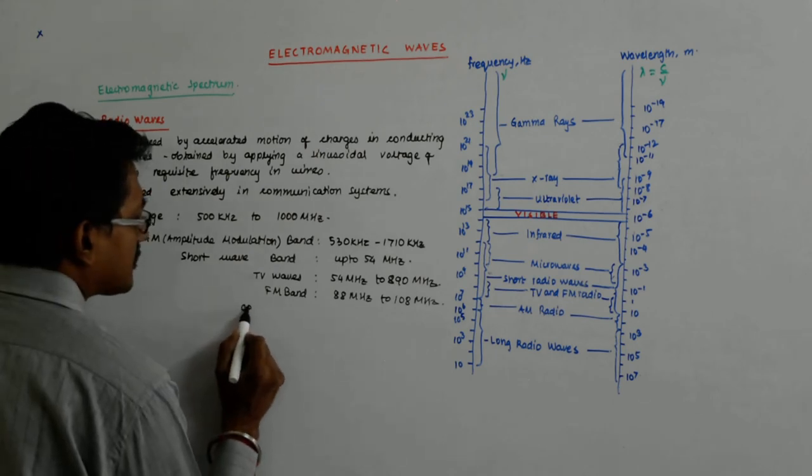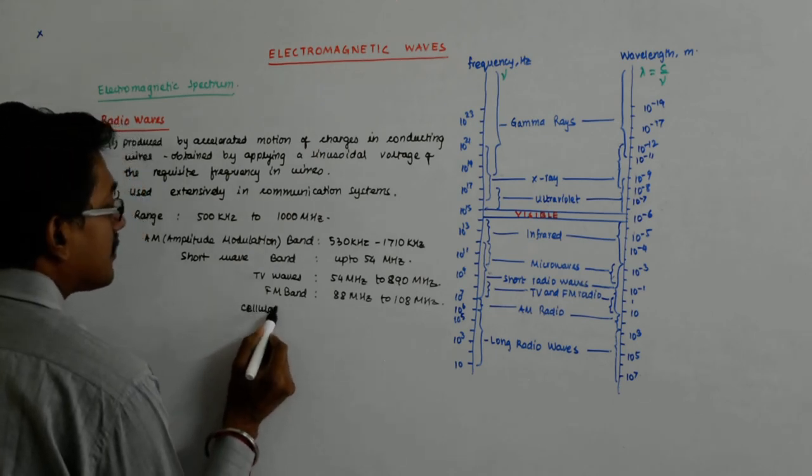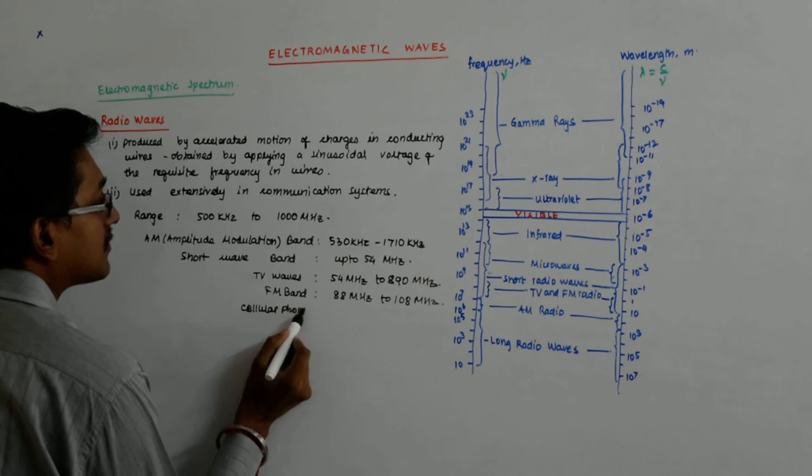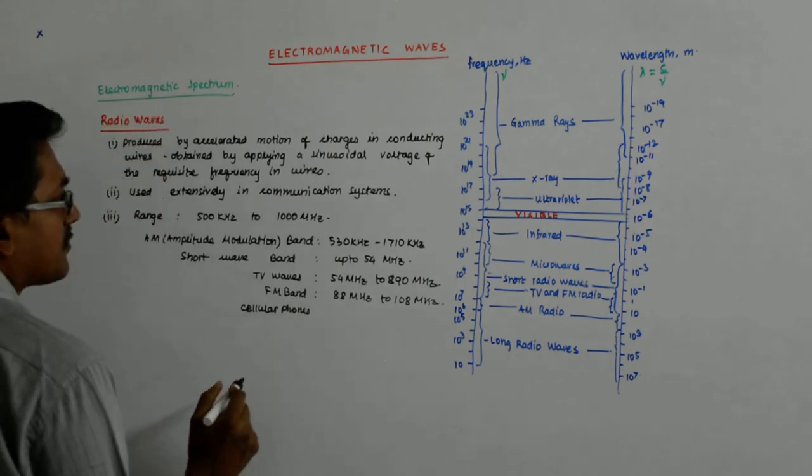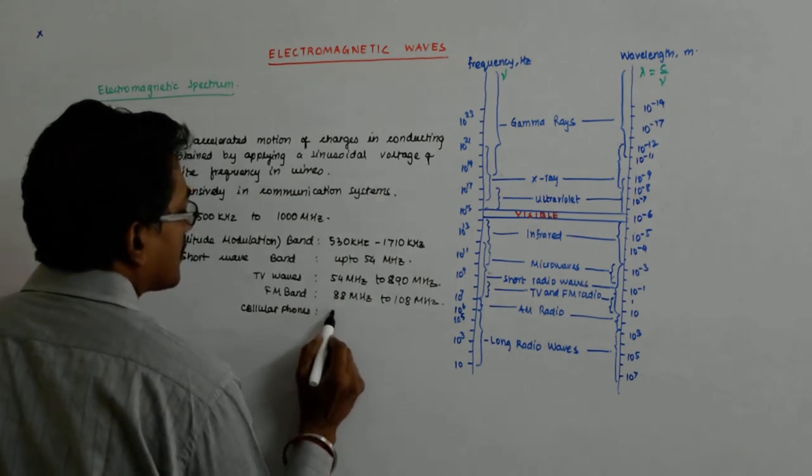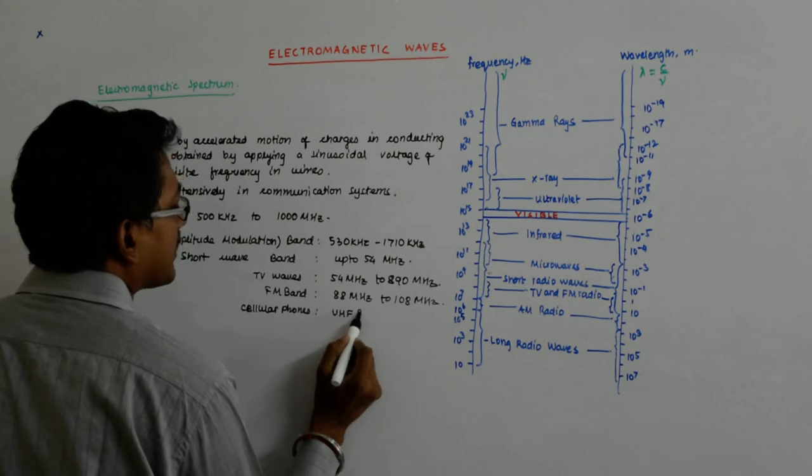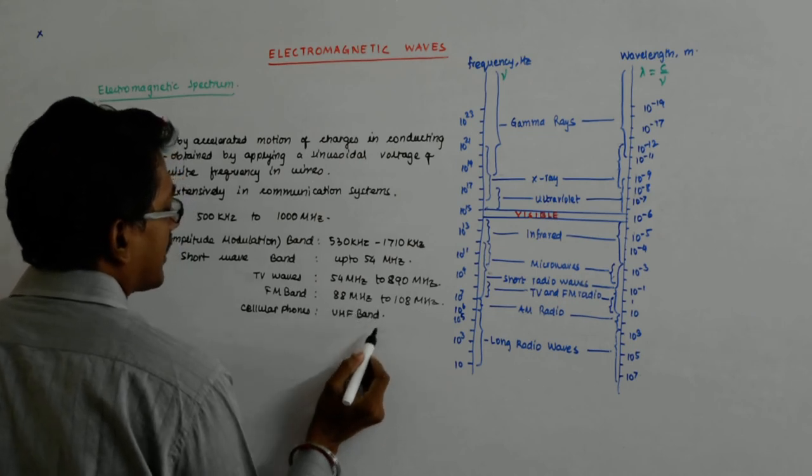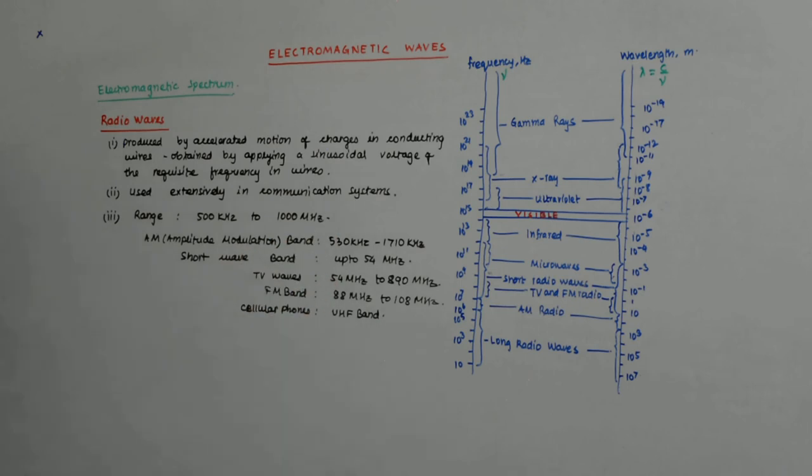The cellular phones are in UHF band - ultra high frequency band - somewhere around 1000 megahertz, 1 gigahertz.